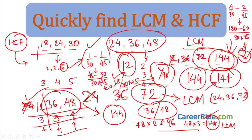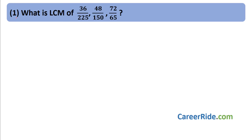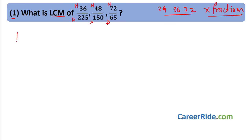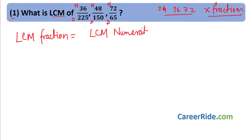Question 1: What is the LCM of 36/225, 48/150 and 72/165? We have not yet seen LCM and HCF of fractions. The formula is: LCM of a fraction = LCM of numerators divided by HCF of denominators. What is at the top? The numerators. What is at the bottom? The denominators. So LCM of the fraction = LCM of numerators ÷ HCF of denominators. Remember this formula — it is very easy.